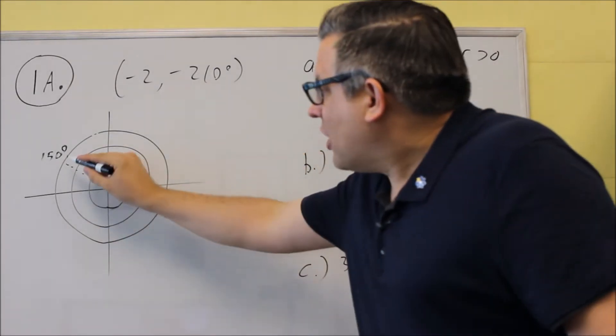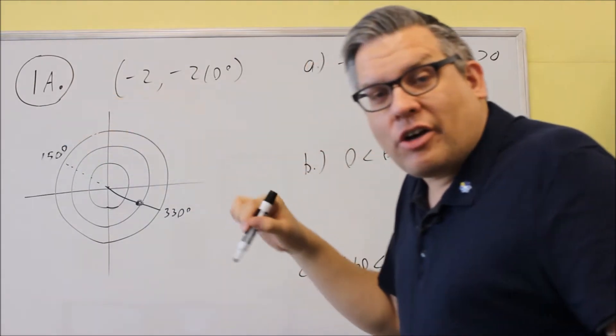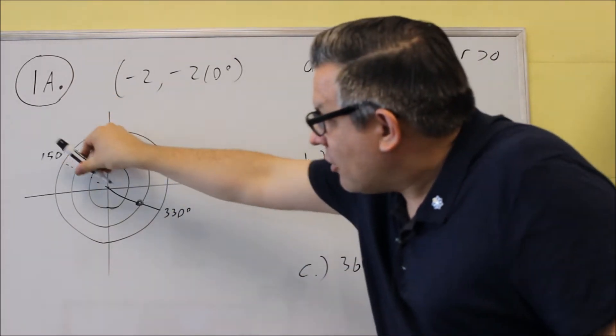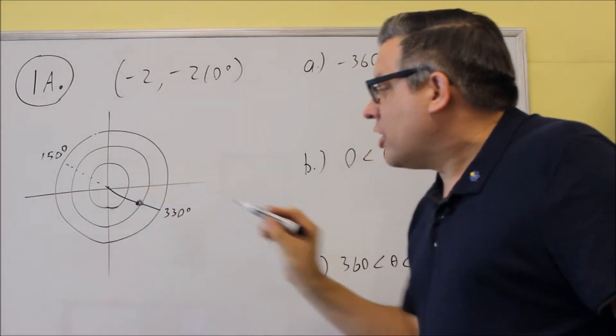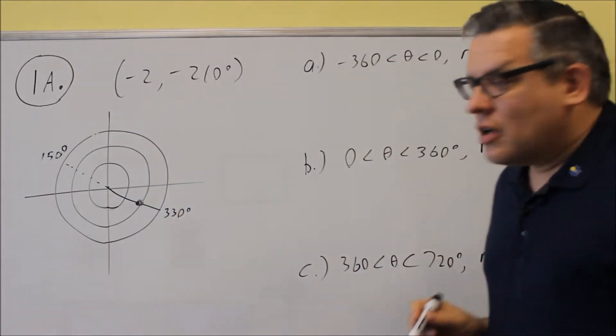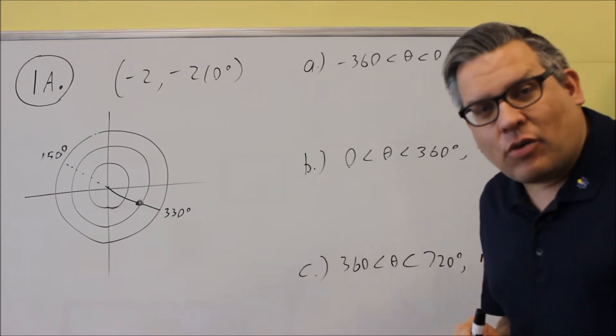So we did negative 2, 210 to here. That made that a dotted line. Reversed 180 degrees in the opposite direction. And then from there, we just counted out two rings, 330 degrees. So that's the first part. They want you to plot that one.